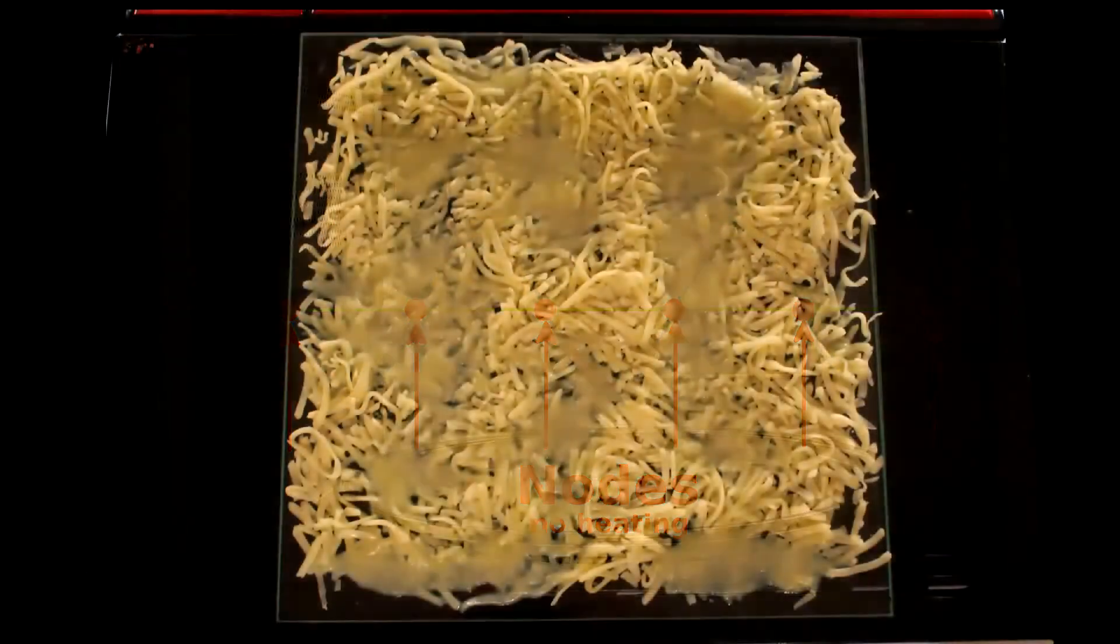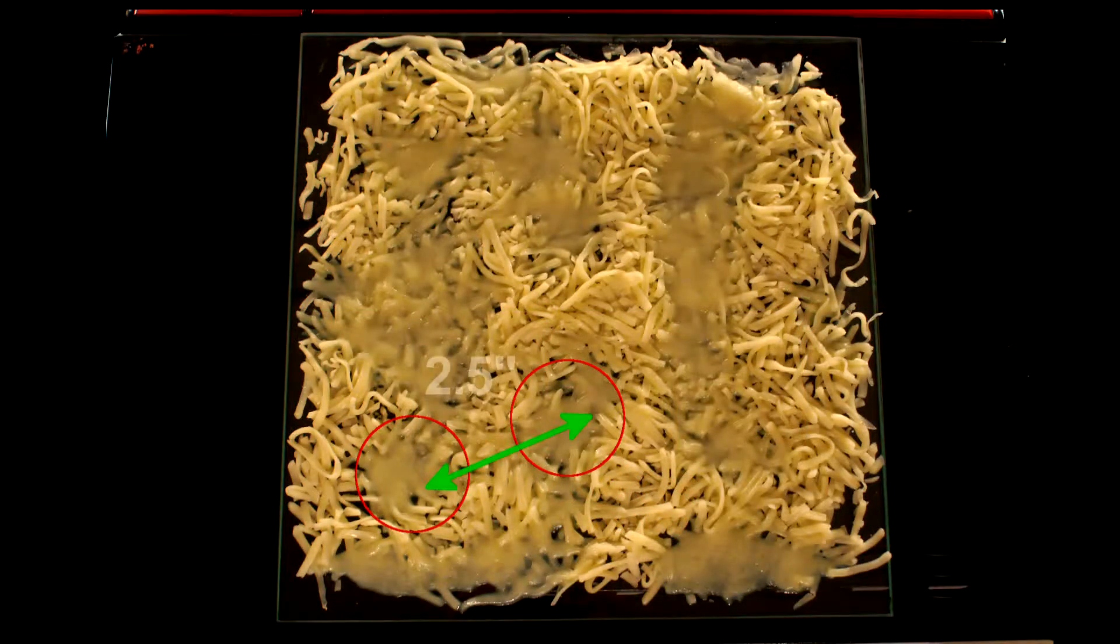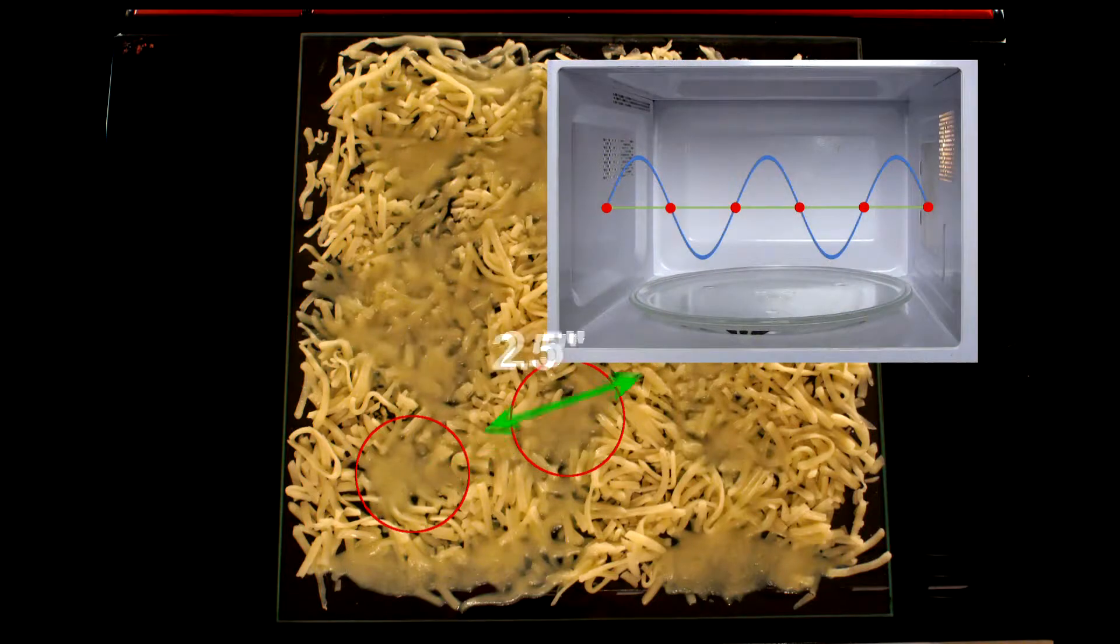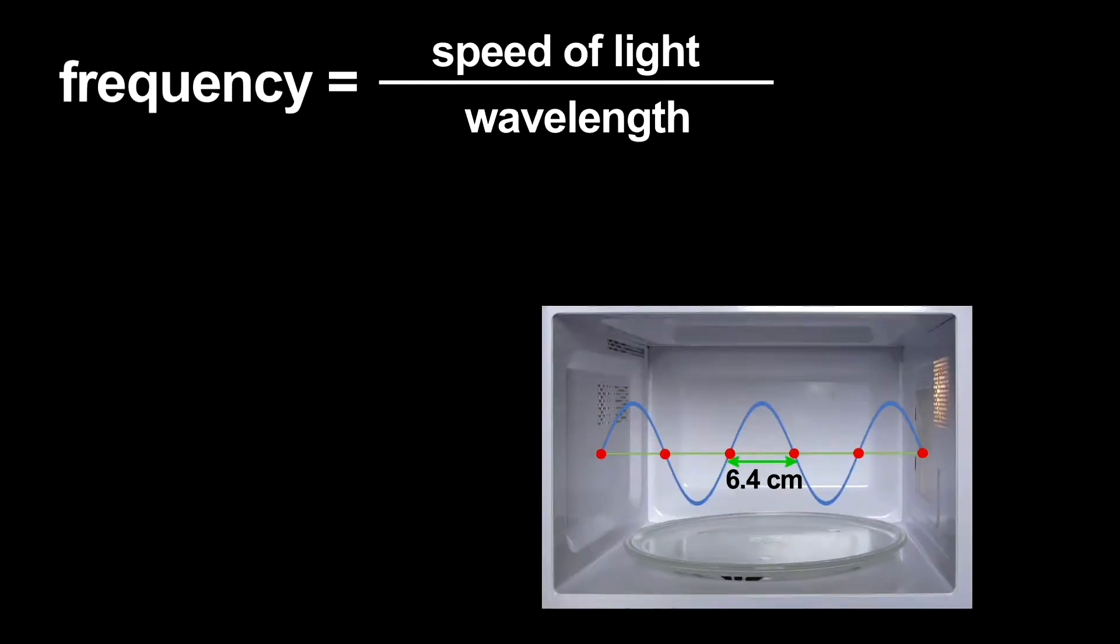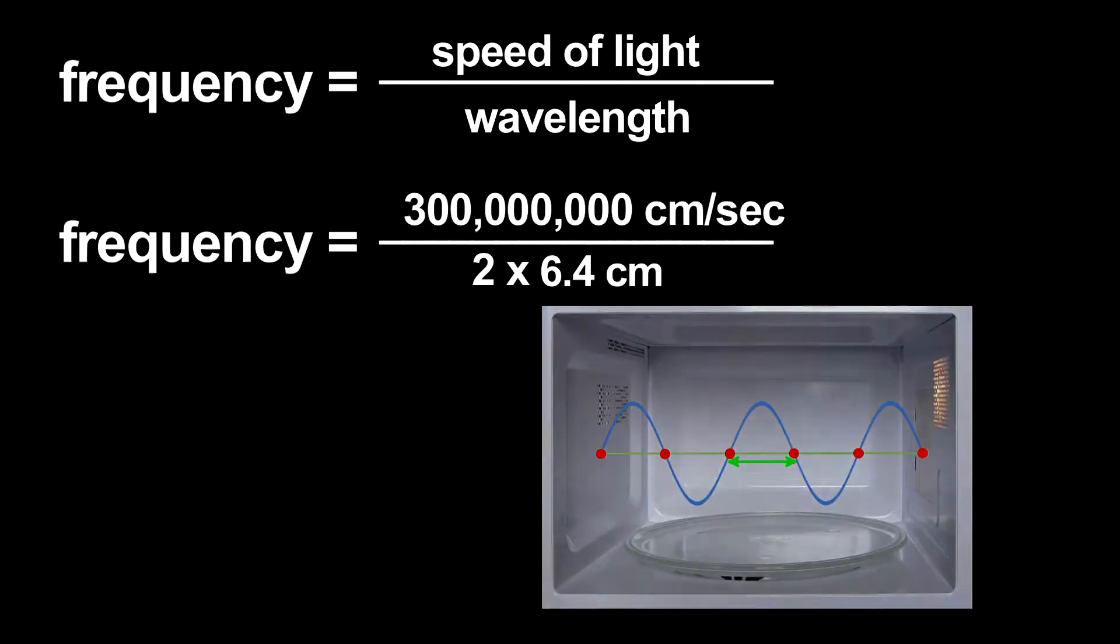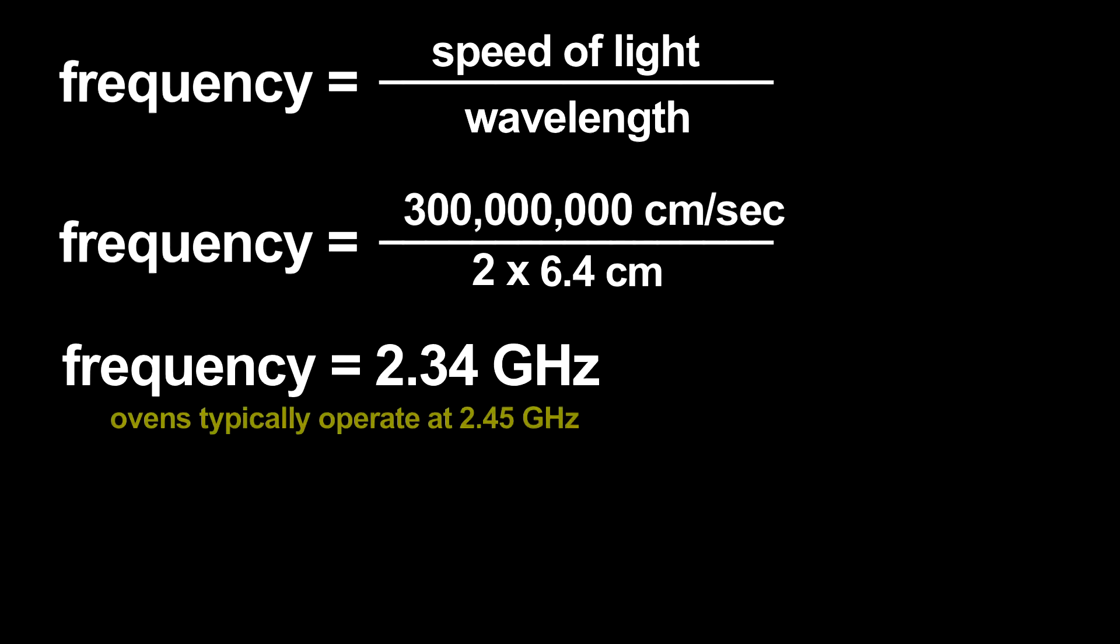If I measure the distance between melted cheese spots, I find about two and a half inches. That would be half the wavelength, the distance between nodes, and is pretty close to the actual wavelength of microwave radiation used. Using that wavelength, I can estimate the microwave radiation's frequency. The frequency is related to the wavelength by the speed of light. I get an answer that only has a 4 or 5 percent error. Not bad for this primitive measurement.